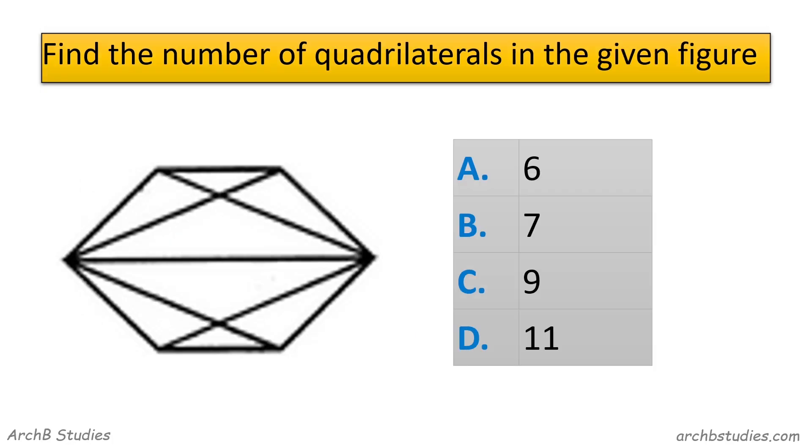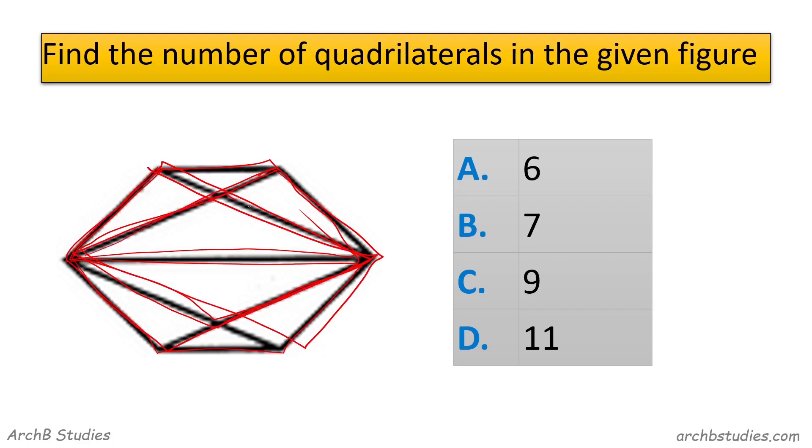Okay, so next question we have find the number of quadrilaterals in the given figure. 1, 2, then 3, 4, similarly this side, 5, 6, 7, 8, 9, and then these two, 1 and 2. So we have 11.